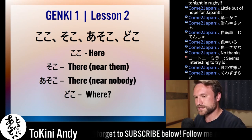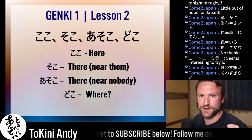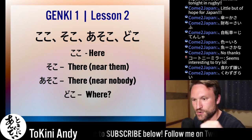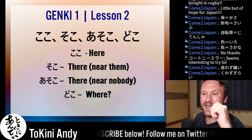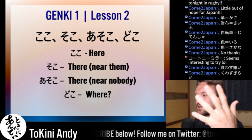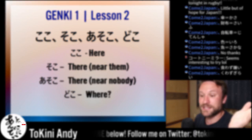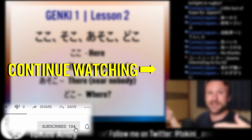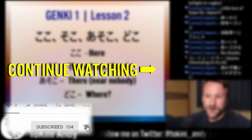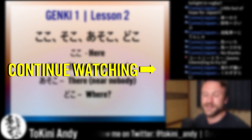Our next set has the same sort of first characters: ko, so, and a. That sort of signifies the same idea, which is close to me, close to them, and farther away from both of us.